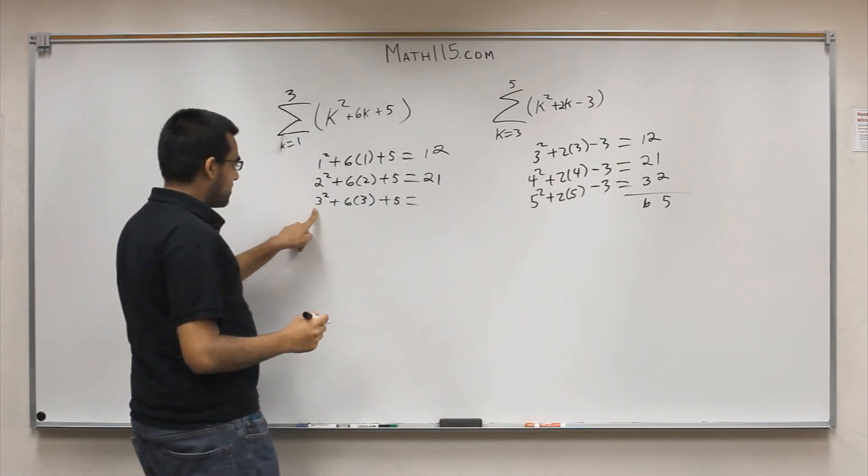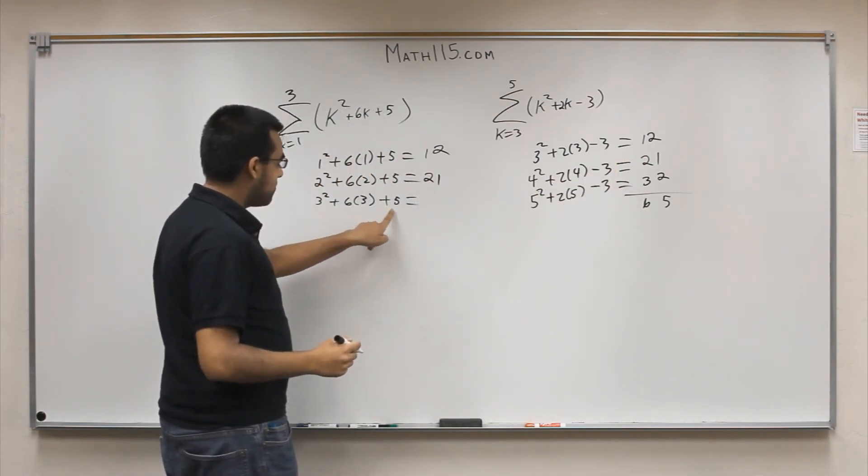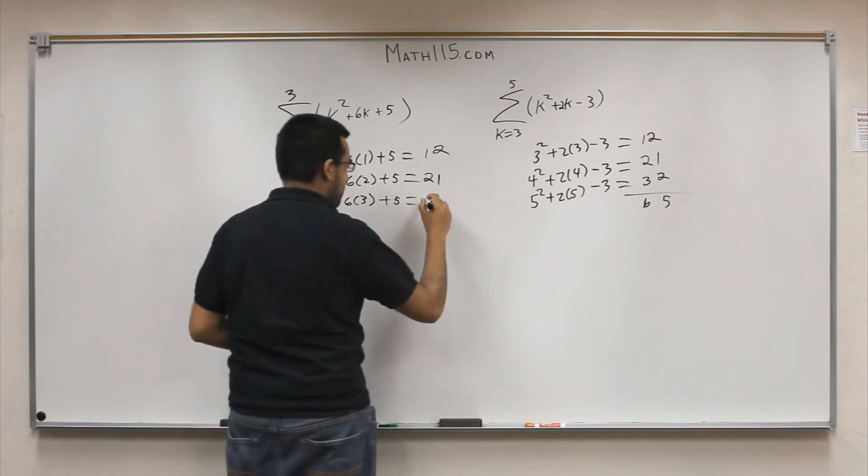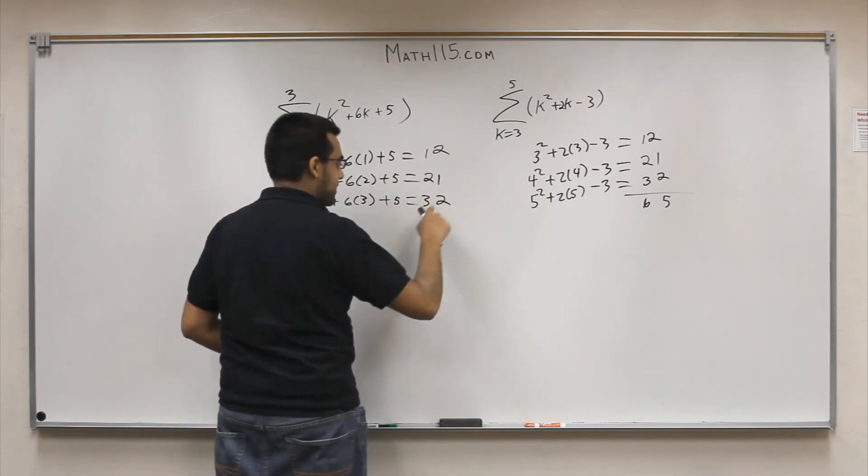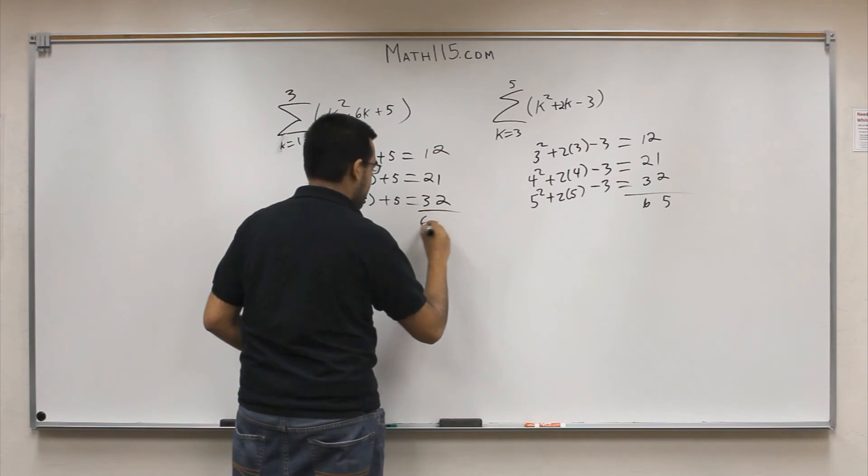Good so far. This is 9 plus 18. That's 27 plus 5 is 32. So that's the same as that. So of course this will add up to 65.